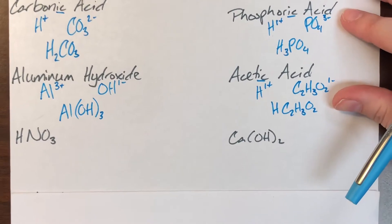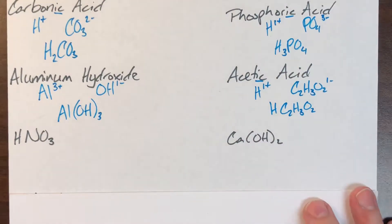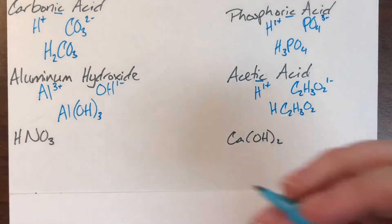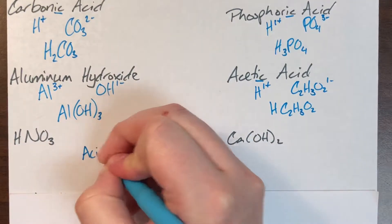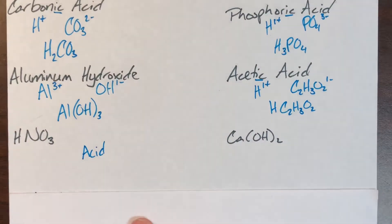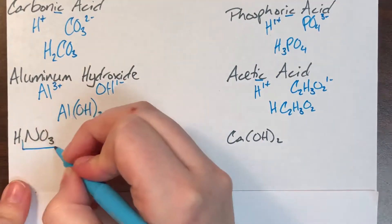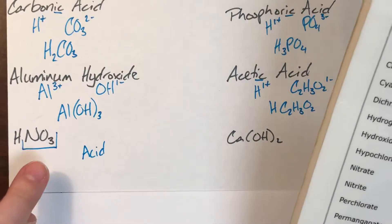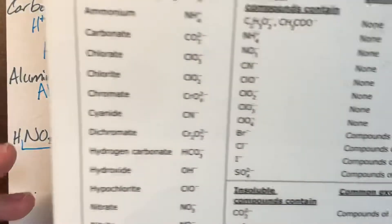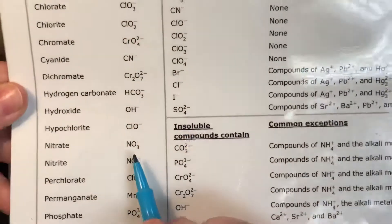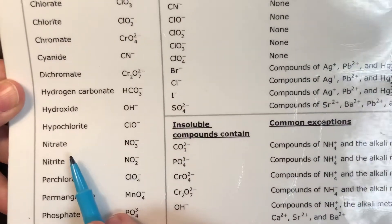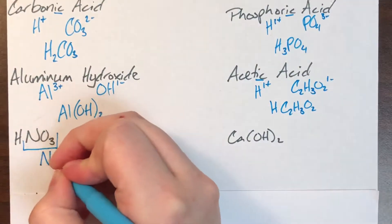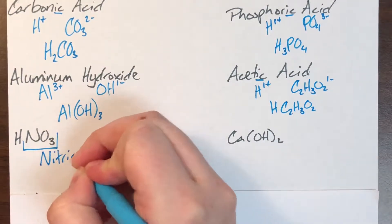Now I have some formulas to convert into names. First, I see a leading H, which means I'm going to end in 'acid.' NO₃ is not directly off the periodic table, so I don't need 'hydro.' NO₃ is nitrate. My '-ate' goes to '-ic,' which turns nitrate into nitric, so this is nitric acid.